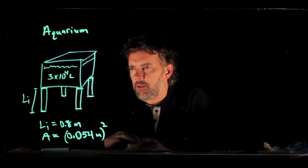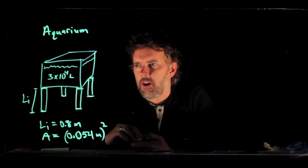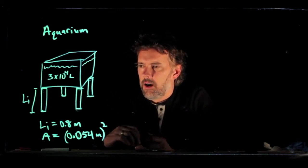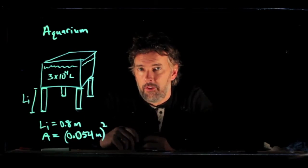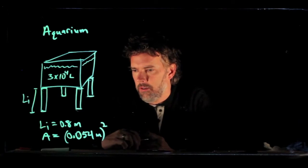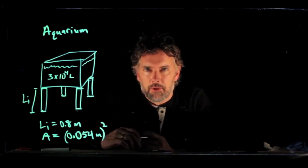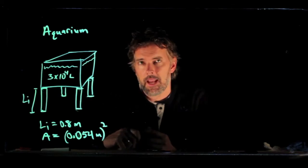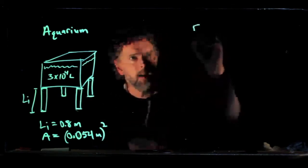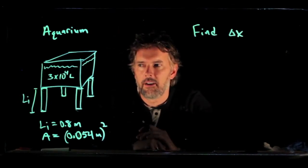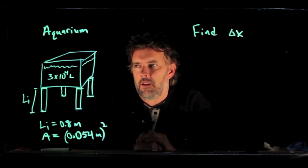And let's say that we have the following numbers. We put a volume of water in there of 3 times 10 to the 4 liters. The legs are made of doug fir, and they have an initial length of 80 centimeters, so 0.8 meters. And let's also say that they are square legs, 5.4 centimeters on a side, which gives them an area of that. And now let's see if we can find how far those things compress. How far do they shrink?